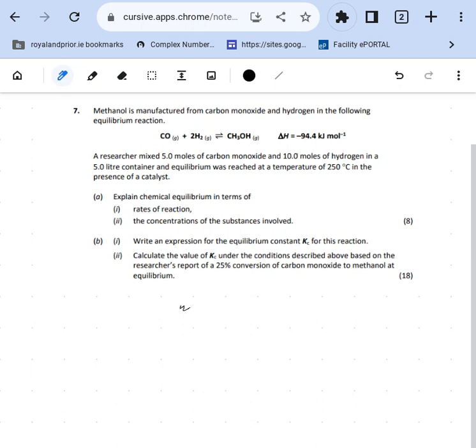How are you doing there folks, so 2022 chemical equilibrium calculation, bit of theory. The first thing here asks us to explain chemical equilibrium in terms of rates of reactions. Chemical equilibrium occurs when the rate of the forward reaction equals the rate of the reverse reaction. So that's the key point there - the rate of the forward equals the rate of the reverse.